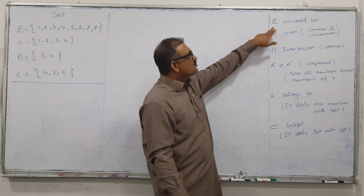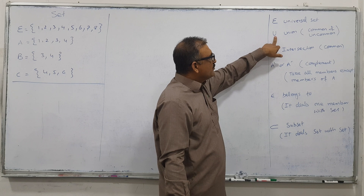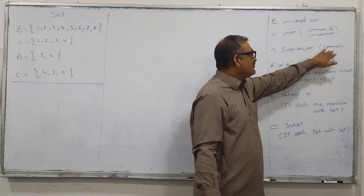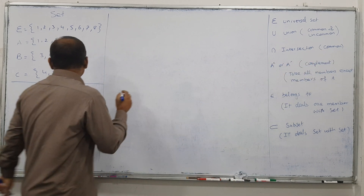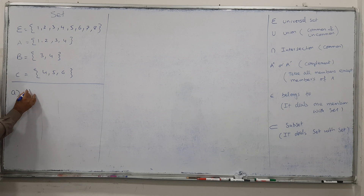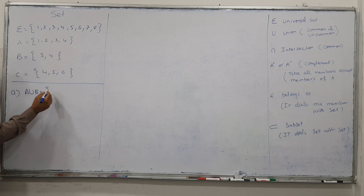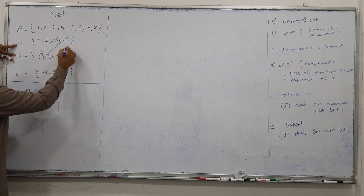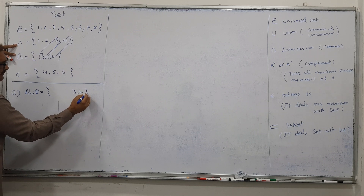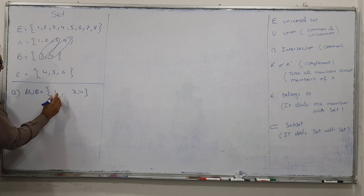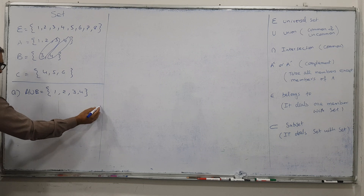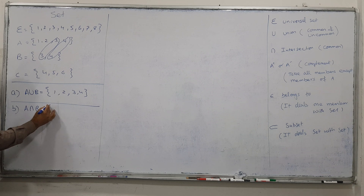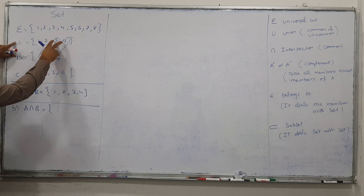So the situation is here: we have a small universal set. This is called union — it means common and uncommon. This is the symbol for intersection — it means common. So let's start two examples. A union B: common are 3 and 4, so take them once, and take the uncommon as well. Answer is 1, 2, 3, 4. Now A intersection B means the common between A and B, so only 3 and 4.